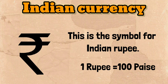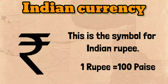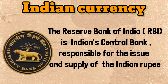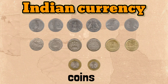This is the symbol of the Indian rupee. 1 rupee is equal to 100 paisa. Reserve Bank of India, RBI, is the Indian central bank responsible for the issue and supply of the Indian rupee. Mainly, Indian currency consists of two types: coins and notes.